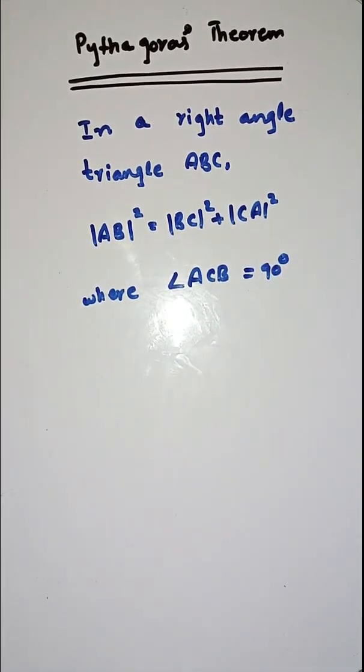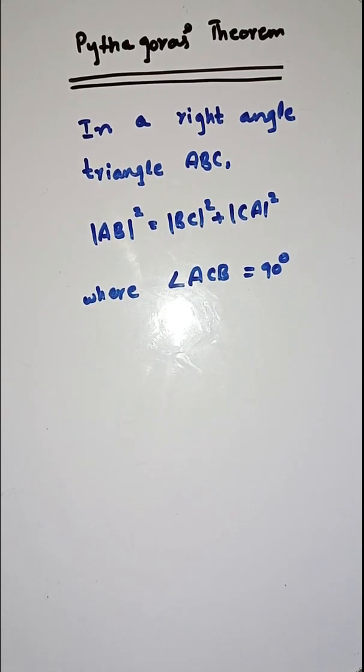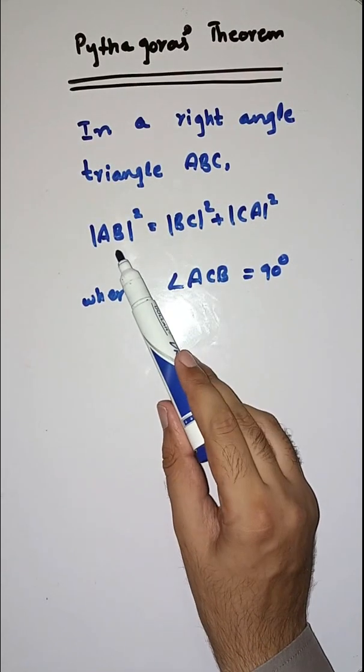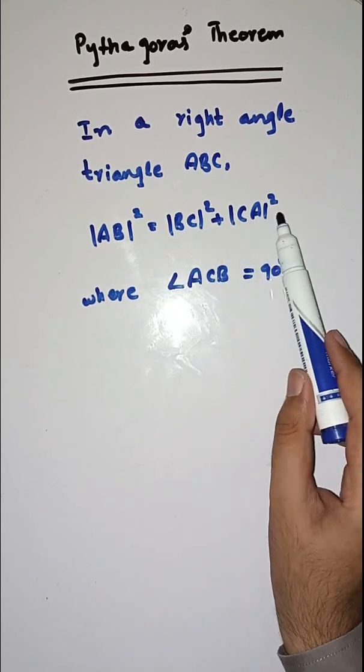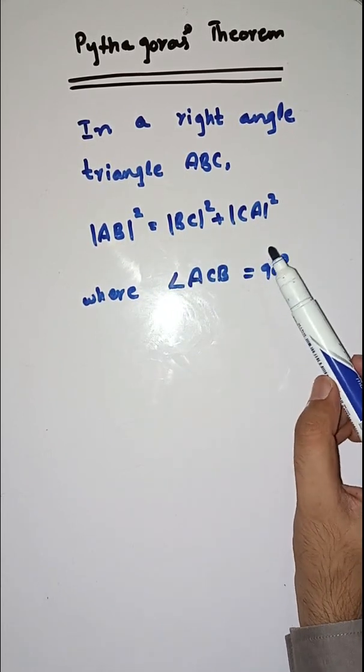So students, what is Pythagoras theorem? According to Pythagoras theorem, in a right-angled triangle, the square of side AB is equal to BC square plus CA square. Simply, what does this mean?